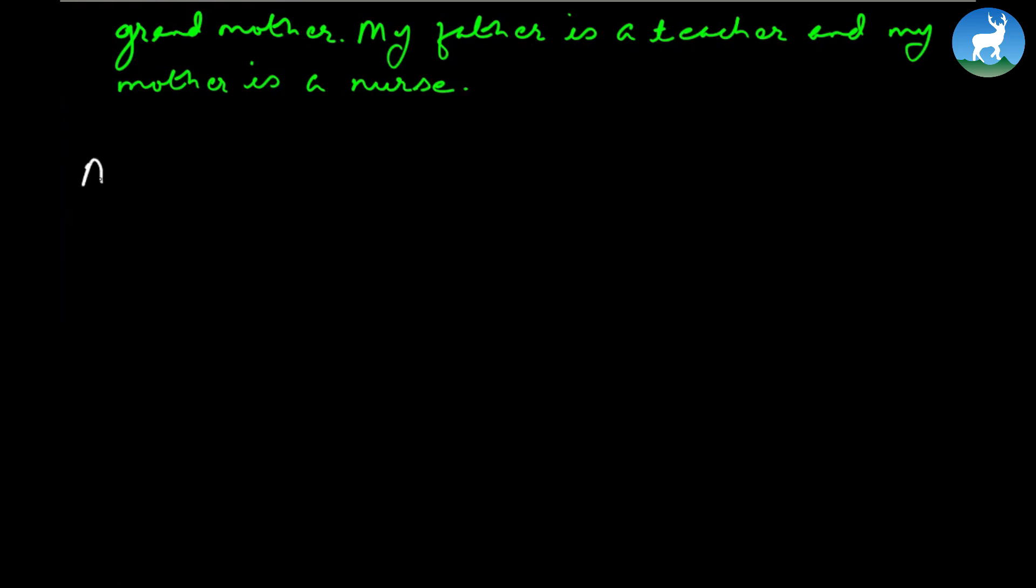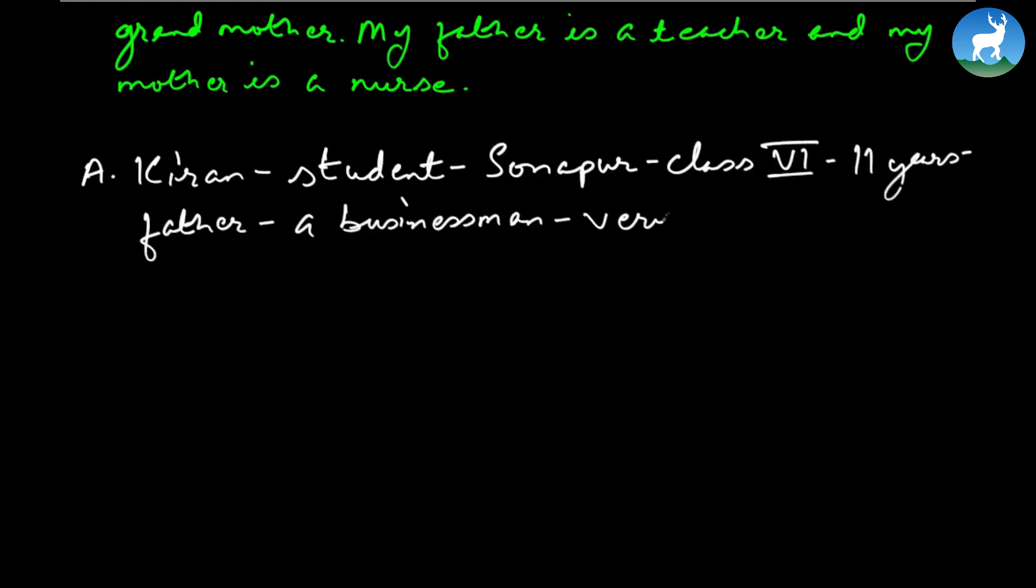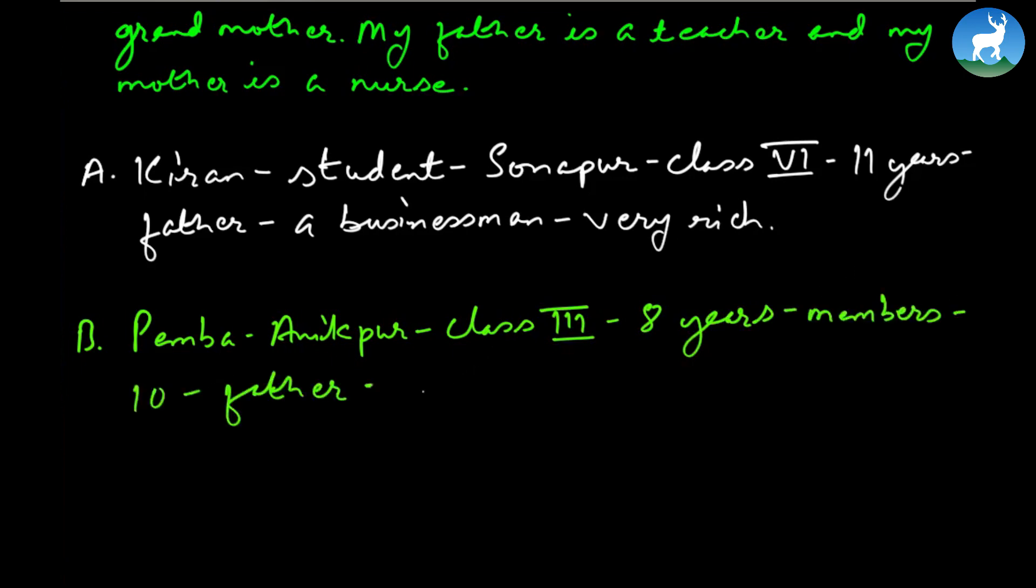Now as we start for number A, we start as the words which you have to make a beautiful paragraph out of it. Kiran is student, Sonapur, class 6, 11 years, father, a businessman, and very rich. See, so here we have Kiran student, Sonapur, class 6, 11 years, father a businessman, very rich. Number B: Pemba, Anikpur, class 3, 8 years, members 10, father or carpenter. So Pemba, Anikpur, class 3, 8 years, members 10 - maybe she has 10 members in her family - and father who is likely to be a carpenter. So you elaborate these words or phrases and make a beautiful paragraph out of it. This you can do it as homework.